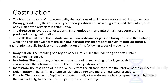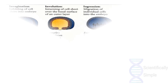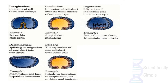Gastrulation involves various types of cell movements: invagination, involution, ingression, delamination, and epiboly. As we can see with pictorial representation — invagination is the folding inward of a cell layer into the embryo, commonly seen in sea urchin endoderm. Involution is when the outer layer of the cell surface rolls over the inner layer to form a second sheet, normally seen in amphibian mesoderm. Ingression is the process in which individual cells from the outer layer enter the blastocoel cavity, seen in sea urchin mesoderm and Drosophila neuroblasts.